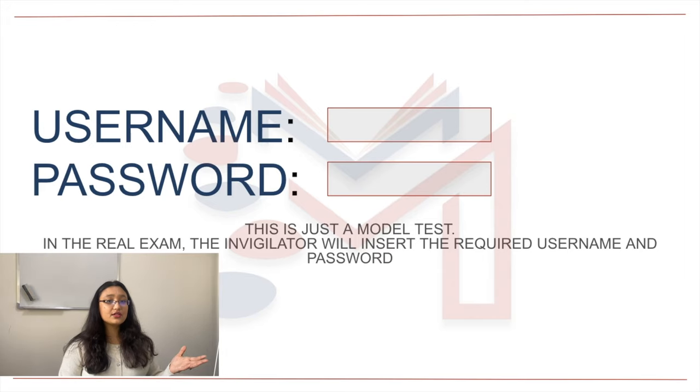After you enter the test hall, they will allow you to sit at a computer. In the first phase of the test, they'll log you in — the invigilator, the people monitoring your test. They're going to give you a designated seat. After you sit there, they'll log you into the computer using their password and username. Once they log you in, you're on your own and supposed to take your test. You see a username and password but you're not going to enter that — the invigilator will.